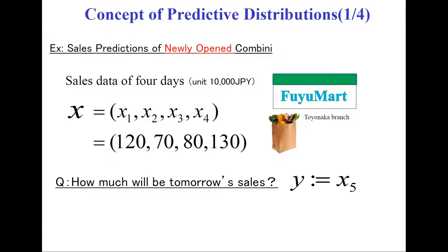Each sales data is given by 120, 70, 80, and 130. Here we adopt as a monetary unit 10,000 Japanese yen. Our problem is: given four-day sales data, how much will tomorrow's sales be, which is denoted by Y?